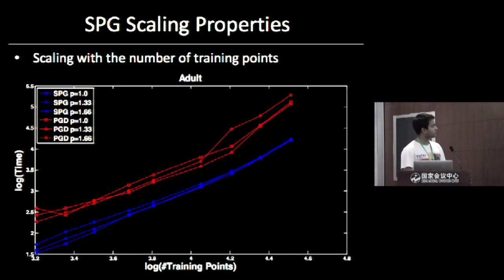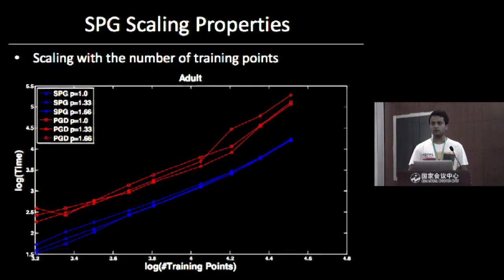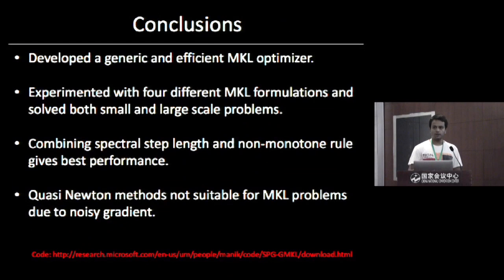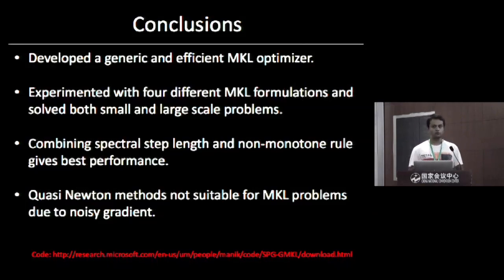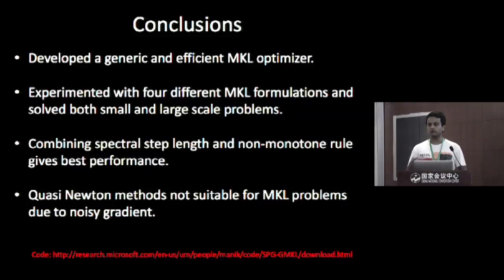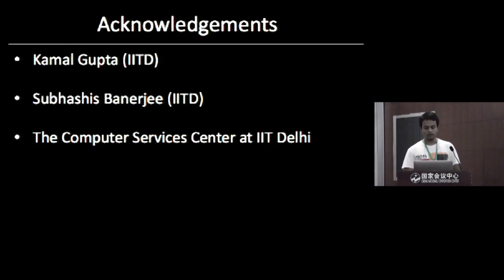Regarding scaling with the number of training points: both PGD and SPG are sub-quadratic with the number of training points, tested up to 32,000 training points on Adult, but the constants for PGD are much higher. In conclusion, we have developed a generic optimizer that is efficient and scalable, experimented with a wide spectrum of datasets and formulations, and shown that combining SPG with the non-monotone rule gives the best results. Quasi-Newton methods don't work well here because of gradient noise, which is always present in MKL problems since the inner SVM cannot be solved to very high precision.